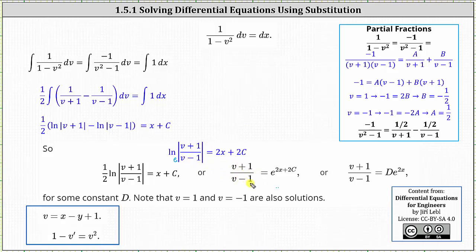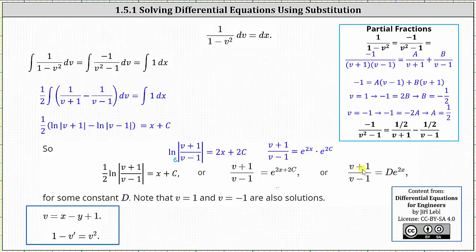We can drop the absolute value here because the exponential term is always positive. The right side, e to the power of two x plus two c, can be written as e to the power of two x times e to the power of two c, and since e to the power of two c is just some constant, we let it equal d. This gives us the quotient of v plus one over v minus one equals d times e to the power of two x. Before continuing, it is important to recognize that v equals one and v equals negative one also satisfy the differential equation one minus v prime equals v squared.